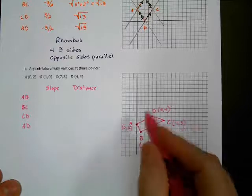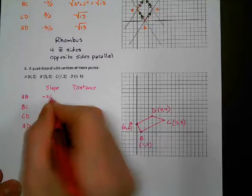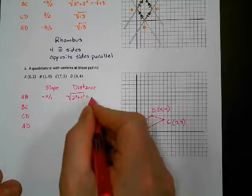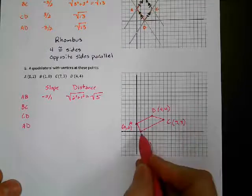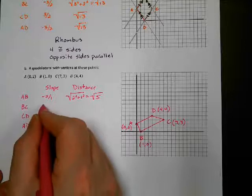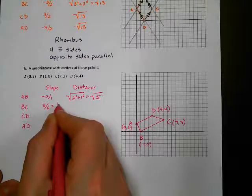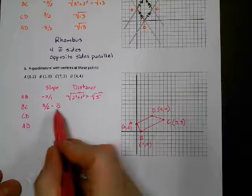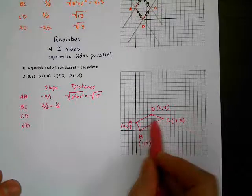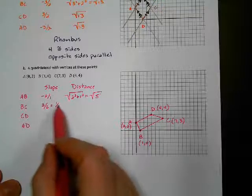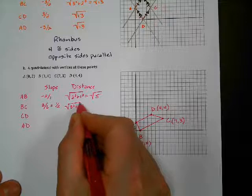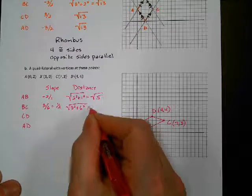AB goes down 2 over 1, so slope is negative 2. Distance: we square 2 and square 1 — 4 plus 1 is square root of 5. BC goes up 3 and over 6, which reduces to a slope of 1/2. But for distance I need to use the original numbers — 3 squared plus 6 squared gives 9 plus 36, which is square root of 45.